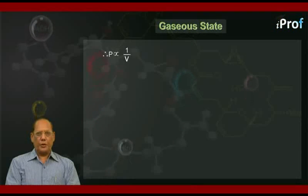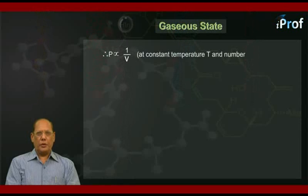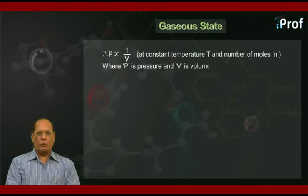Therefore, P is proportional to 1 upon V at constant temperature T and number of moles n. Where P is pressure and V is volume of the gas.